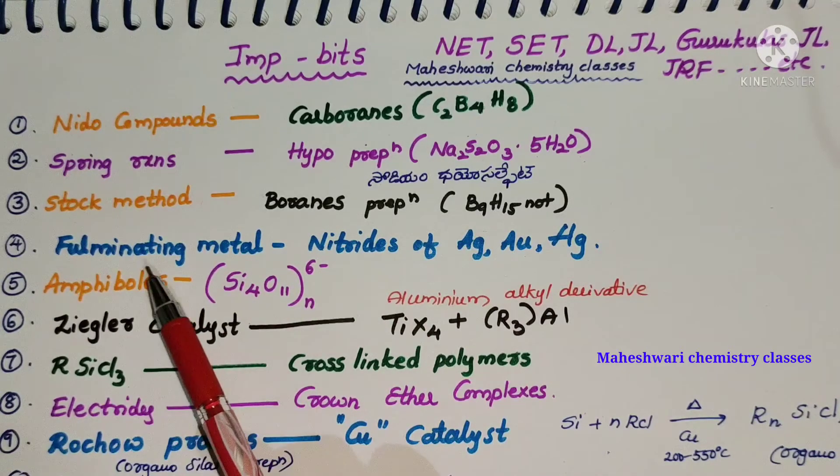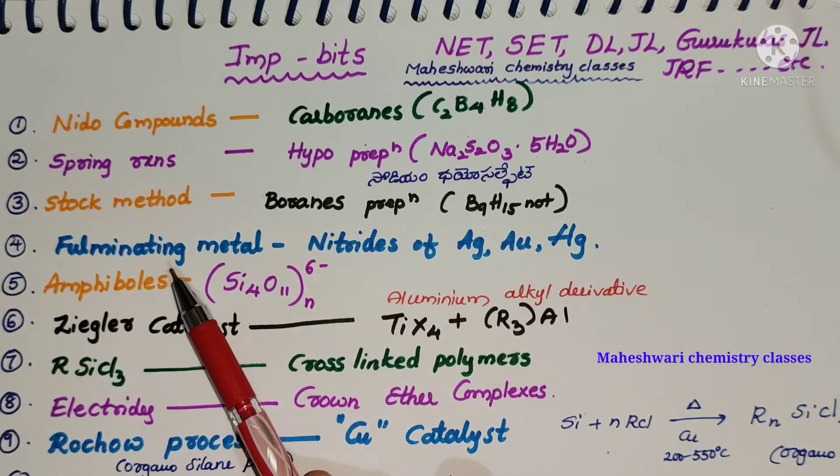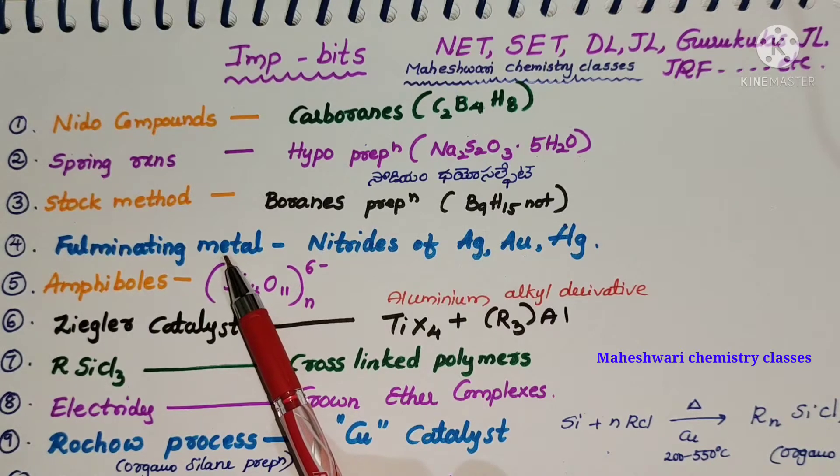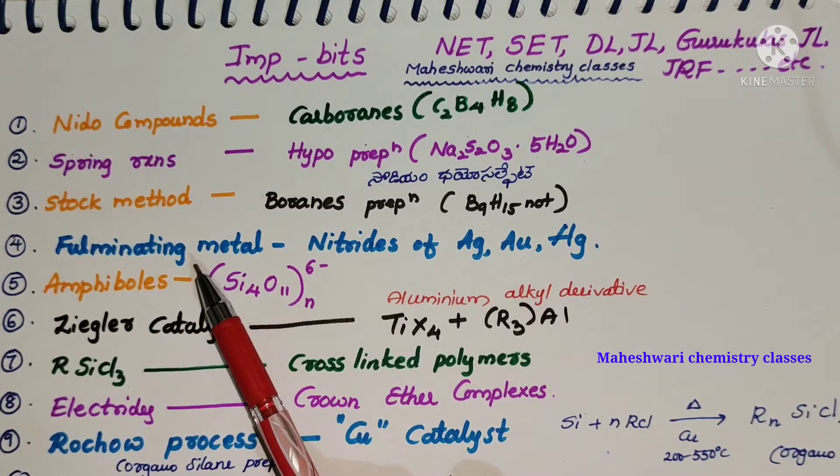Next, fulminating metal. Actually fulminating metal, fulminating metal fraction of seconds low bombardment like reactions from nitrides of silver, gold, or mercury.